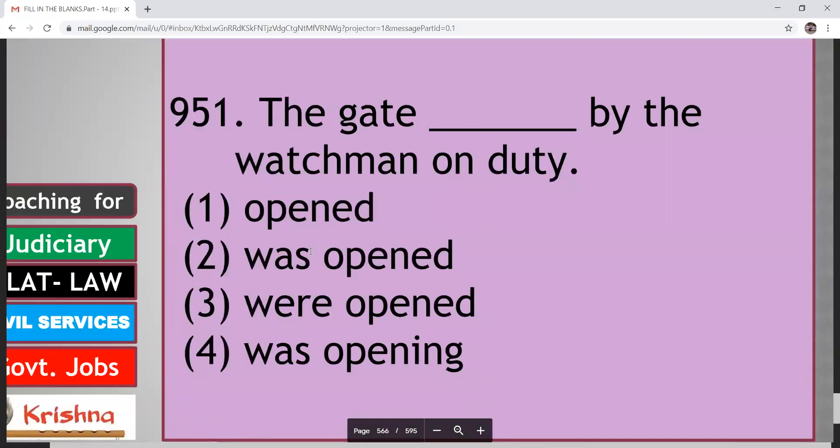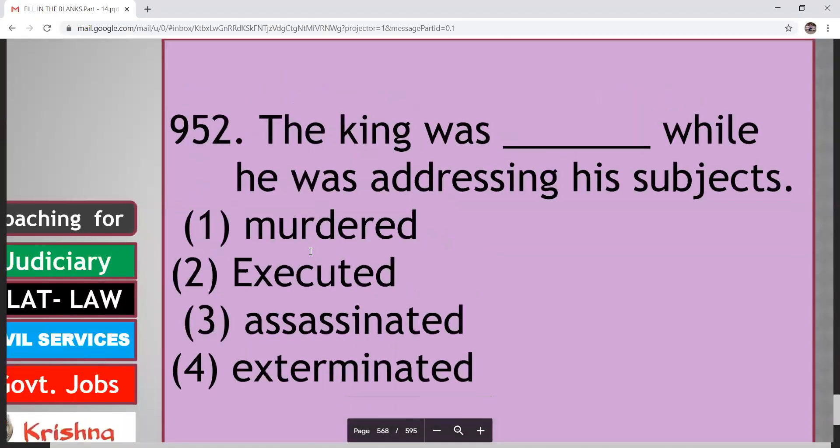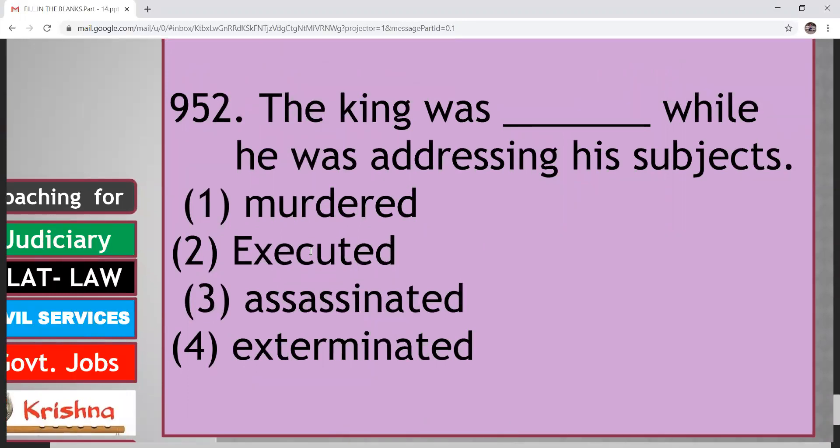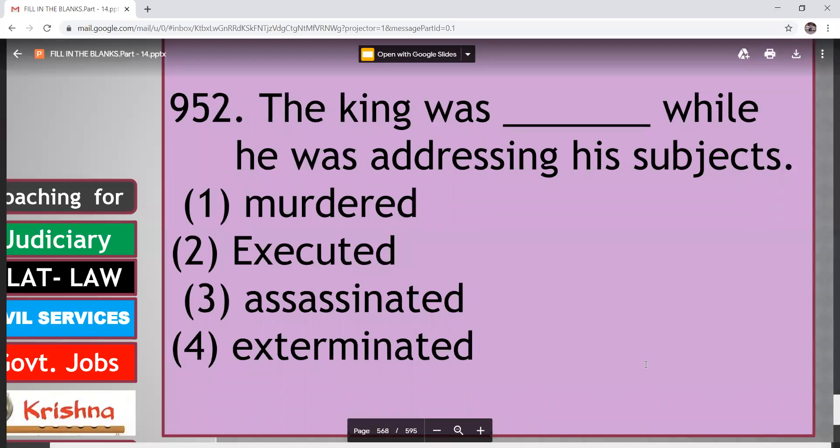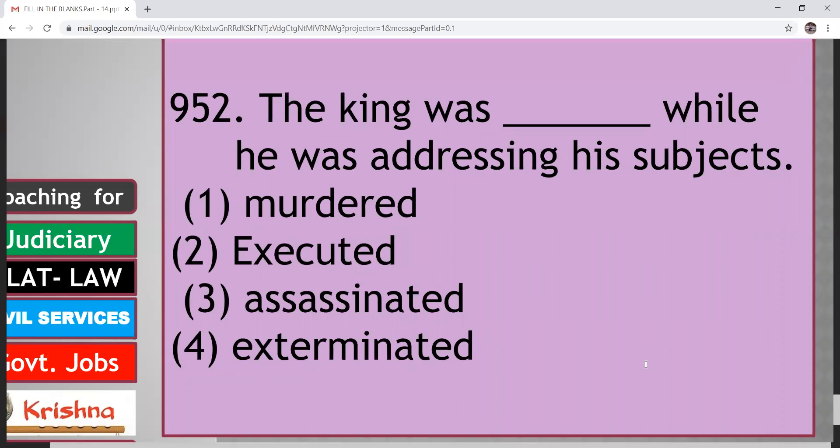The gate dashed by the watchman on duty. Opened, was opened, were opened. So here you can use past simple passive. So here answer is was opened. The gate was opened by the watchman on duty. Next. The king was dashed while he was addressing his subjects. Murdered, executed, assassination, exterminated. So here answer is assassinated. The king was assassinated while he was addressing his subjects. Assassinated means murder. If a famous person is murdering for political reasons. Execute means apply. Exterminated means wipe out. Kill all the members of a group. So answer will be assassinated.